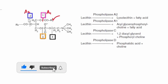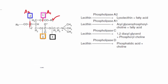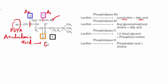Phospholipase A2 hydrolyzes the ester bond at the second position of glycerophospholipid and forms lysolecithin and a fatty acid. Lysolecithin can also be reutilized to produce lecithin back by the enzyme acyltransferase. The fatty acid at the second position is mostly a polyunsaturated fatty acid, and mostly it is arachidonic acid, which is a precursor of eicosanoids. Phospholipase A2 is an enzyme present in the venom of bees and viper snakes.